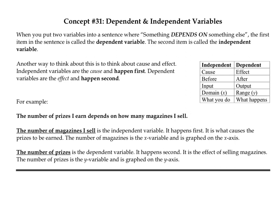Y will always depend on x. If you're making a graph, the dependent always goes on the y-axis. I've included in this chart that the independent variable is always x — a reminder that x is our domain. The dependent variable is always y, and that's called our range. Independent is your input, dependent is your output. Those are just helpful reminders.